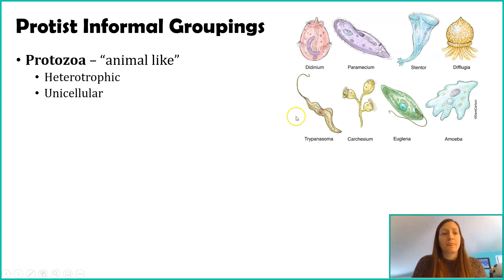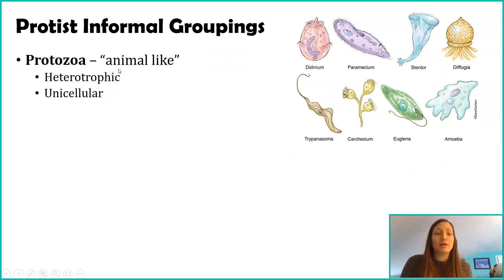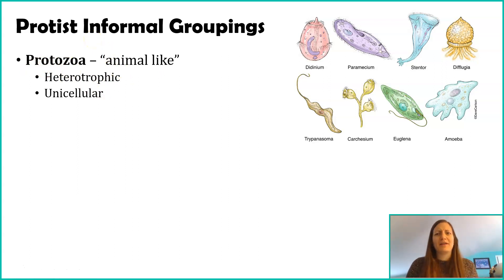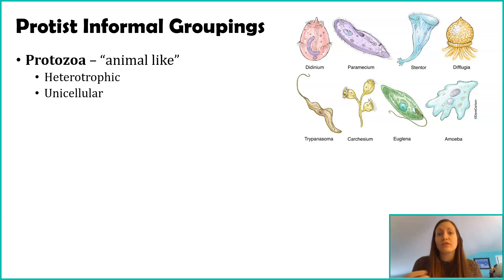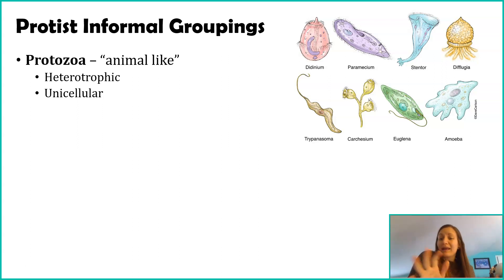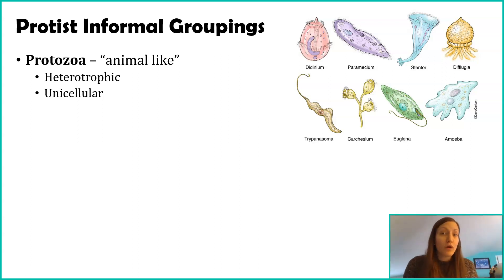The first informal grouping is protozoa. The prefix 'proto' means first, and 'zoa' refers to animal — so these are the animal-like protists. What makes them animal-like? They're heterotrophic, meaning they consume other things, similar to animals. The reason they're not considered animals is that all protozoans are single-cellular — only one cell. In order to be classified as an animal, you have to be multicellular. We do think that protozoans were what gave rise to animals.